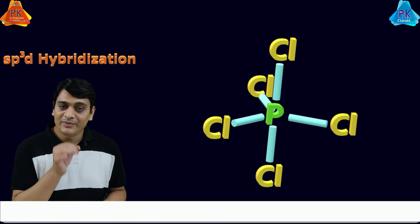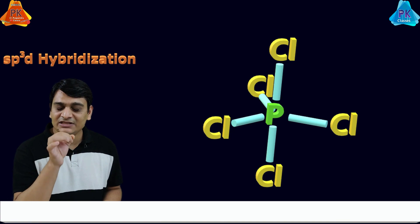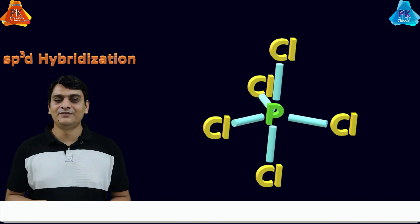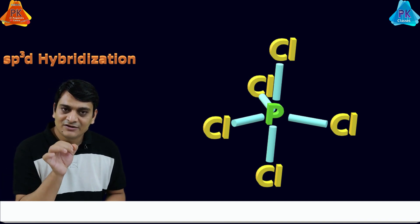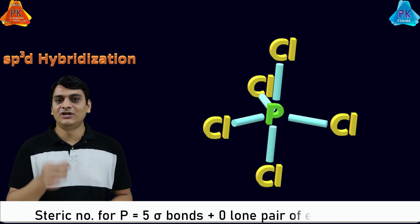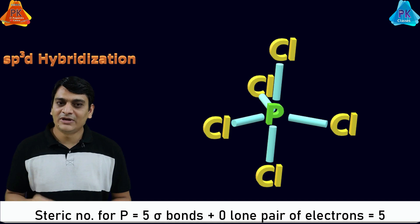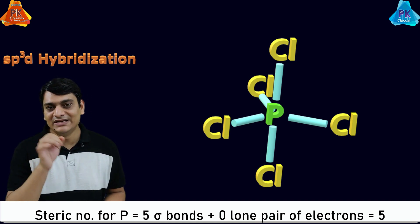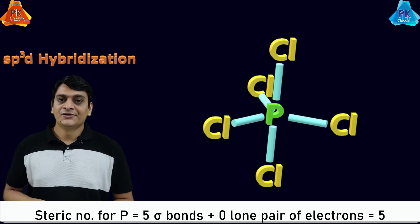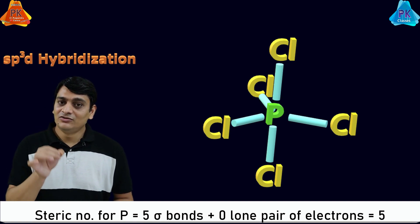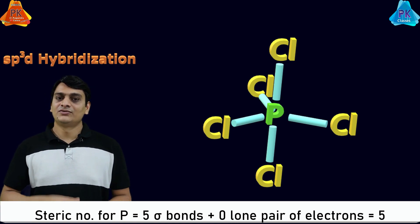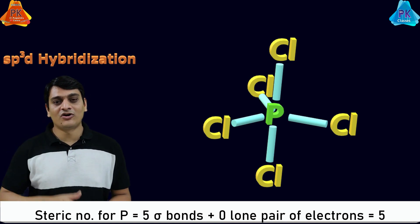Here I am taking the example of PCl5 for better understanding of sp3d hybridization. Coming to the steric number for PCl5: it contains five sigma bonds, and the steric number equals the number of sigma bonds plus the total number of lone pairs on the central atom, which is phosphorus. So steric number equals five plus zero, because it doesn't contain any lone pair, giving steric number five.